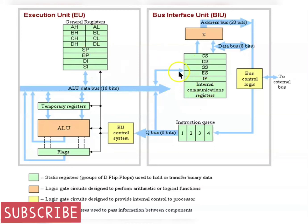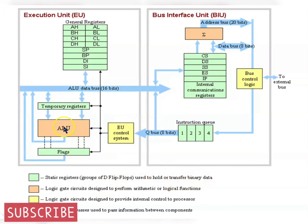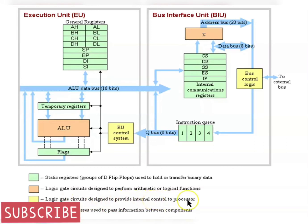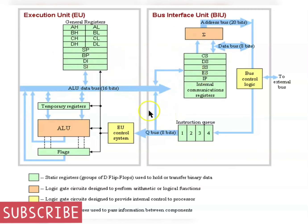The blocks in green color are made up of flip flops to transfer data. The blocks in orange color are designed with logic gates to perform arithmetic or logic functions. The blocks in yellow color are also designed with logic gates — they provide internal control to the processor. The blue lines are the internal data bus to pass information between components of the microprocessor.